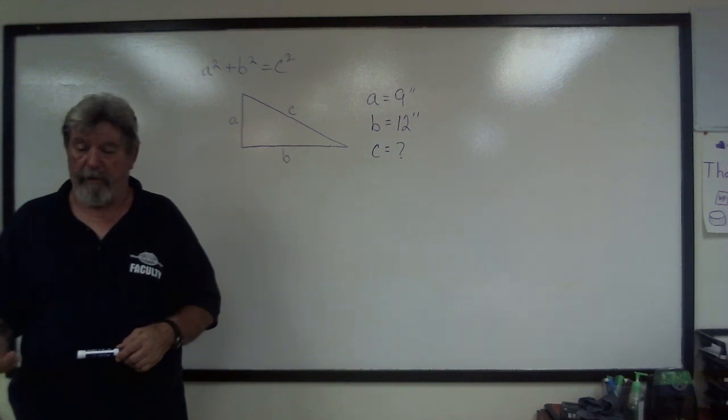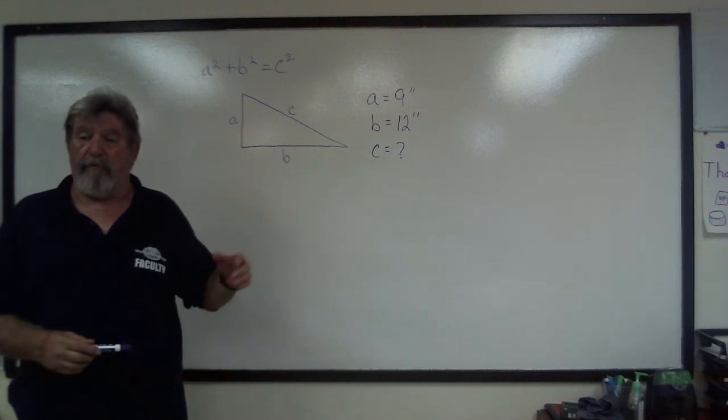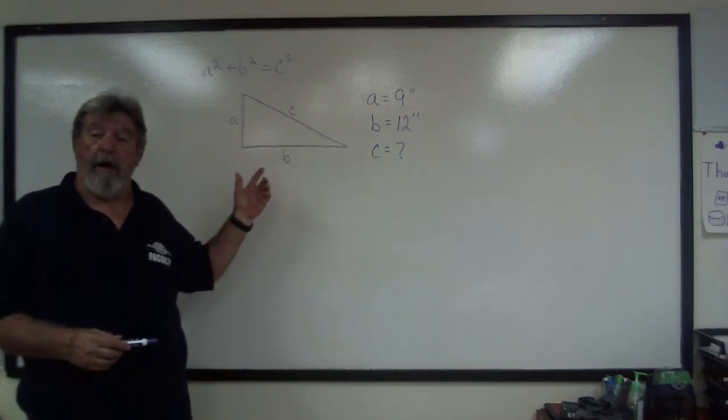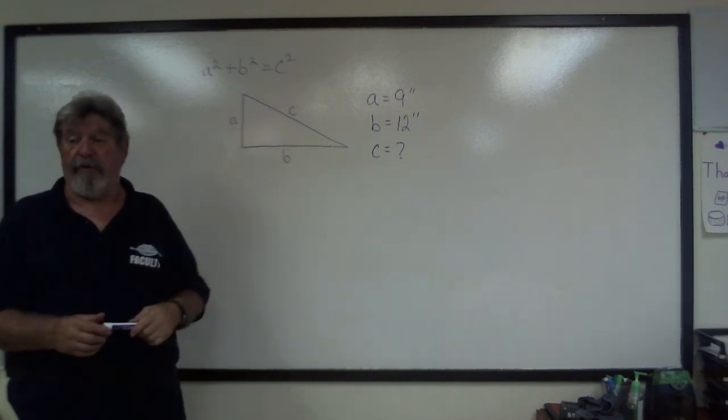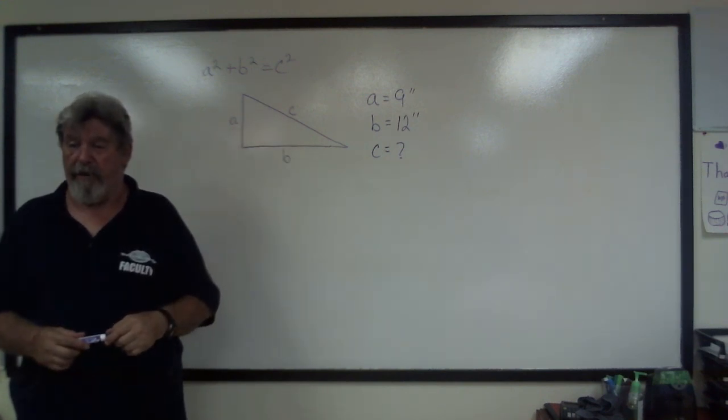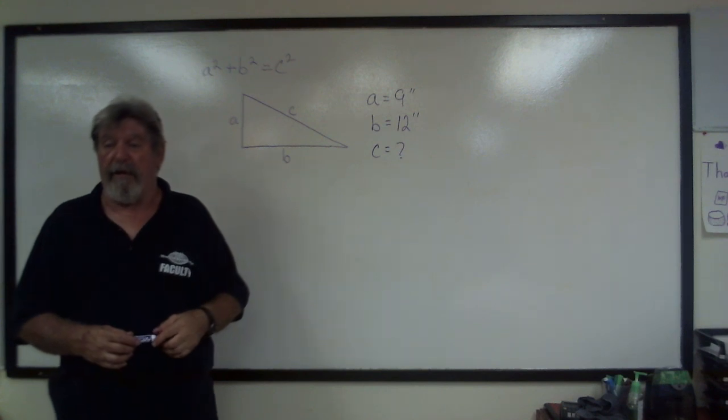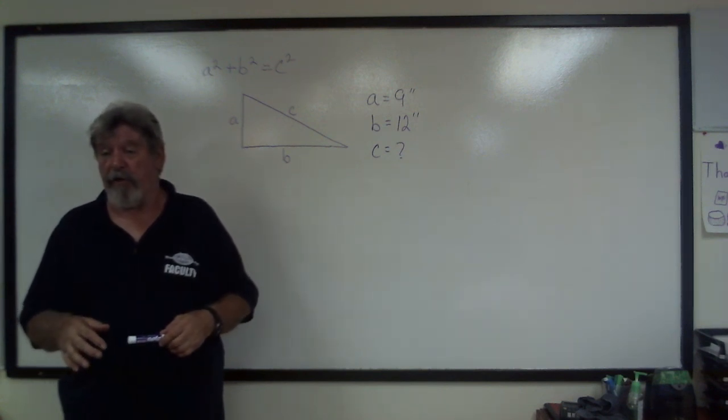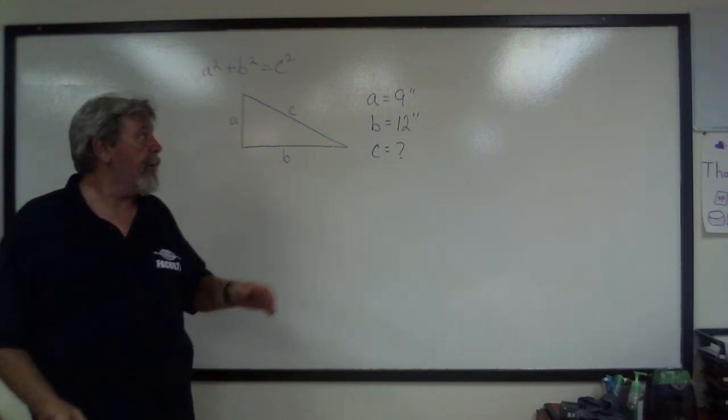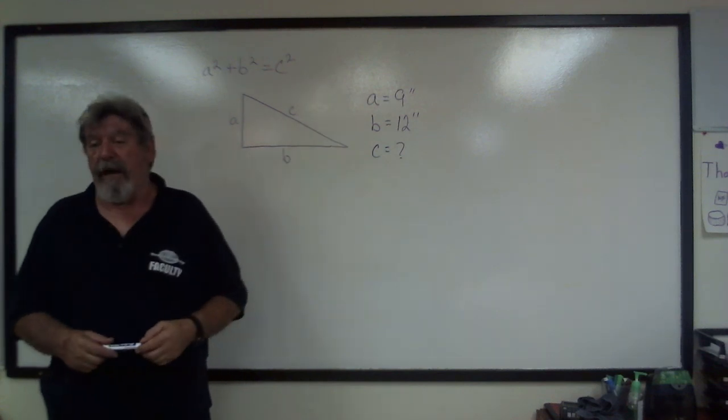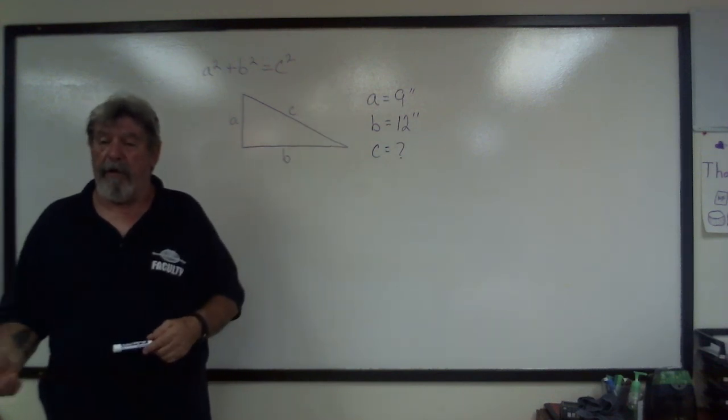So the first part we're going to do is we're going to solve for the hypotenuse, which is C in the Pythagorean theorem. And since the Pythagorean theorem says that A squared plus B squared equals C squared, we have some dimensions here for A and B. I'm going to show you how we use that.